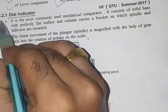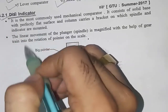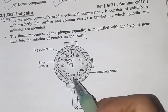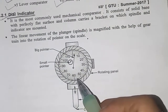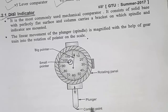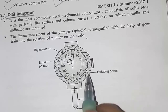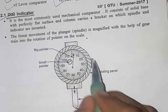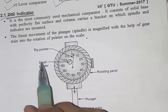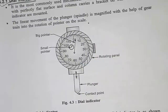The dial indicator is the most commonly used mechanical comparator. From the figure, you can see the plunger with a contact point, a rotating panel, a big pointer, and a small pointer — these make up the construction of the dial indicator.